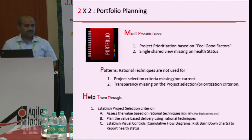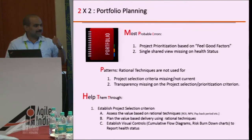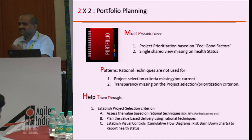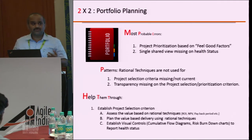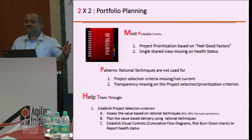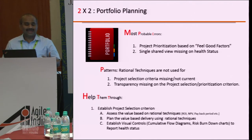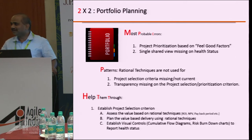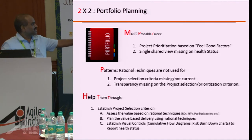As an Agile coach or practitioner, you need to bring that transformation. First, assess the value using techniques like return on investment, net present value, and payback period. Second, plan the value — go and ask what value is being generated out of this particular project. Do a value stream mapping exercise, identify value-added steps and non-value-added steps. Then deliver value. Use techniques like cumulative flow diagrams and risk burndown charts — make sure they are available on the walls, not just on a scrum master's laptop. It should be clearly available on the boards so that people themselves can know. This is how you can mitigate these two errors.